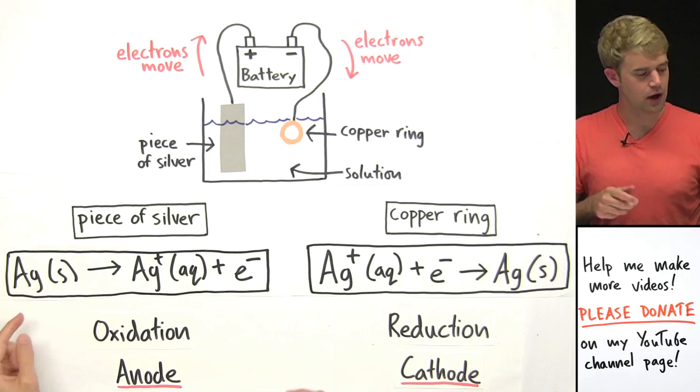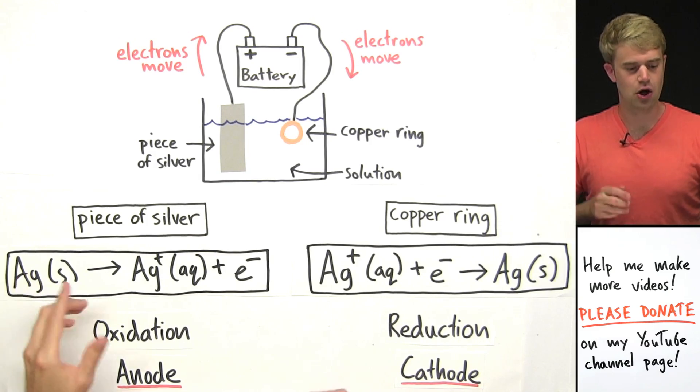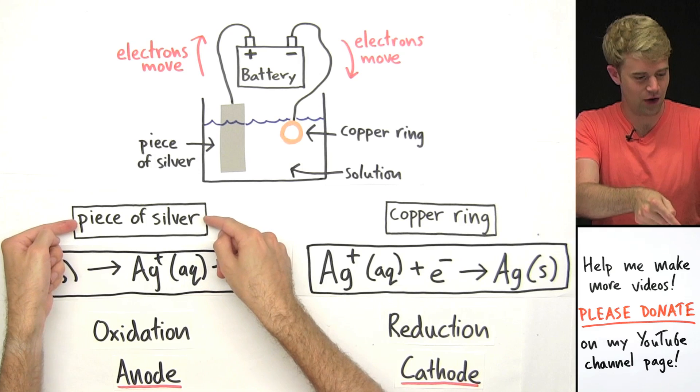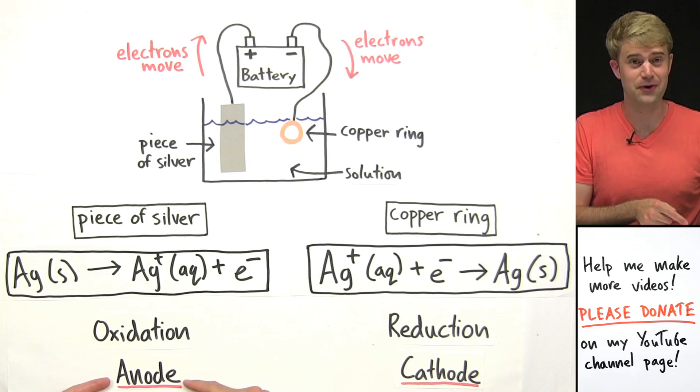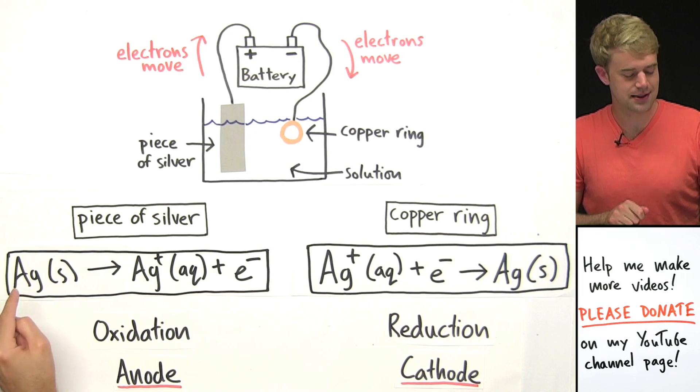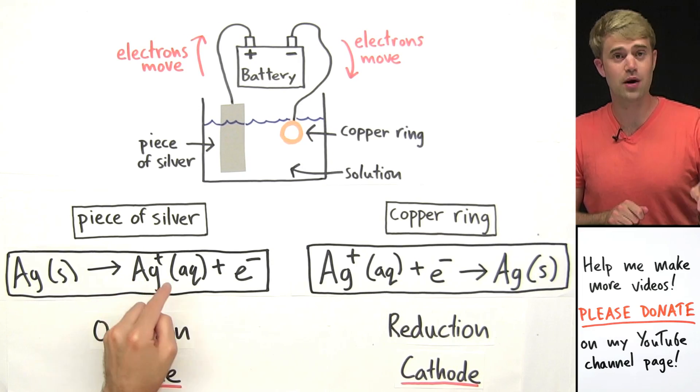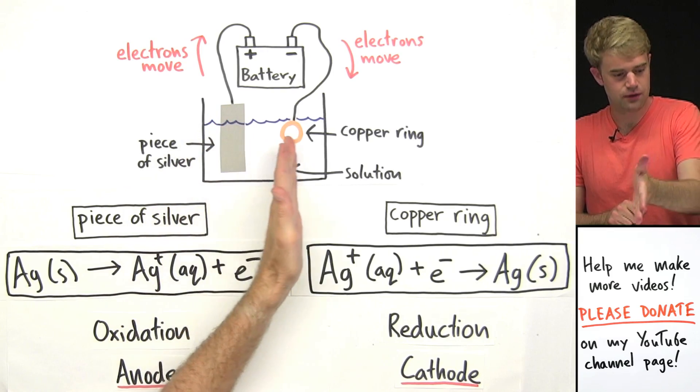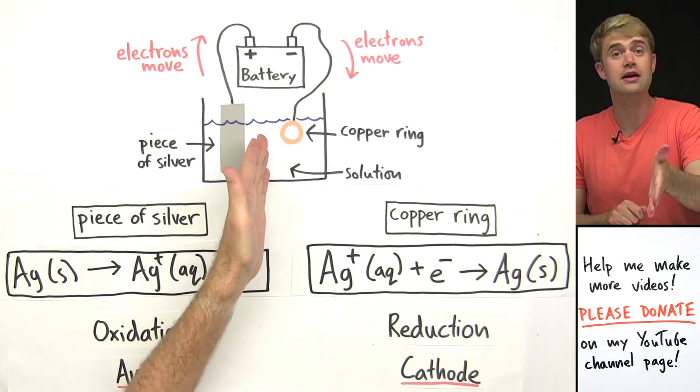On the piece of silver, neutral silver atoms are losing electrons, so oxidation is happening and we can call the piece of silver the anode. Losing electrons turns the neutral solid silver into silver 1 plus ions, which means that they come off the surface of the piece of silver, they dissolve in the solution.